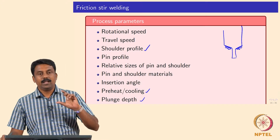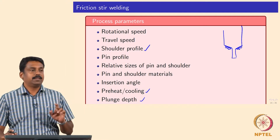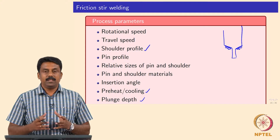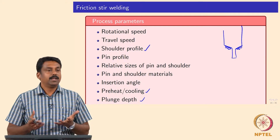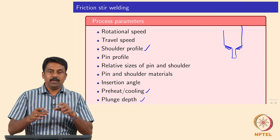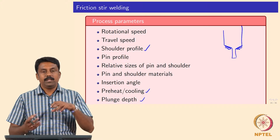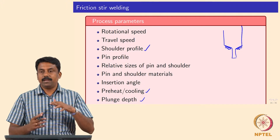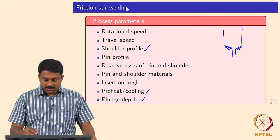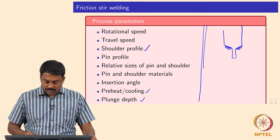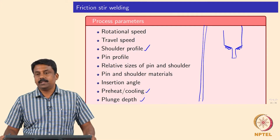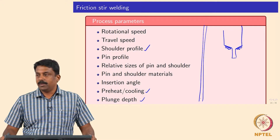The plunge depth — at what depth you insert the pin into the interface — is another parameter. It can be full thickness or half thickness. With partial insertion, the material is heated more, and mechanical deformation also occurs in the unplunged region. These are all process characteristics commonly varied to achieve the desired weld geometry.